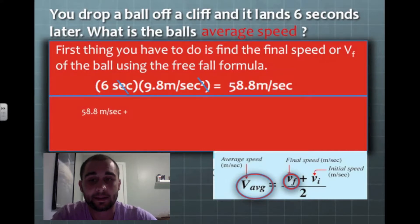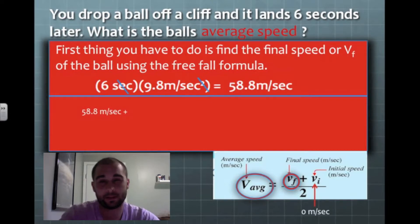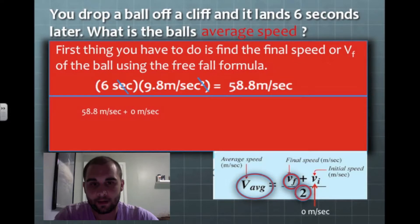And then I'm going to add zero to it. Because our initial speed was zero. Before the ball was dropped, it was in the person's hand. And it was just at rest. It was at zero. So I'm going to add those two together. And then I'm going to divide by two after I add them together.